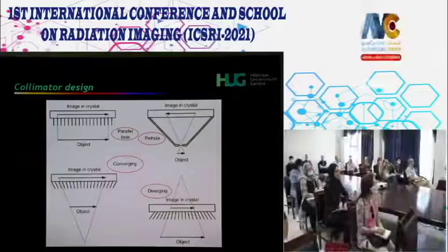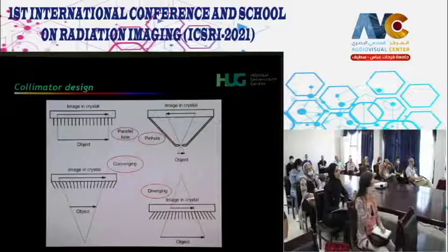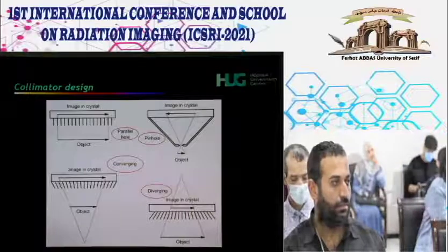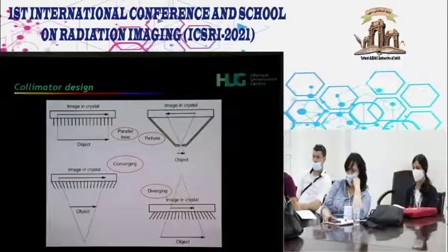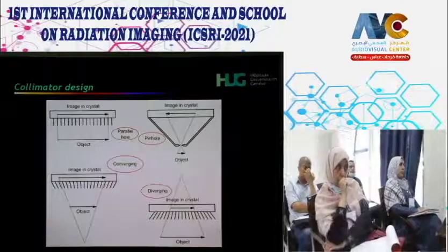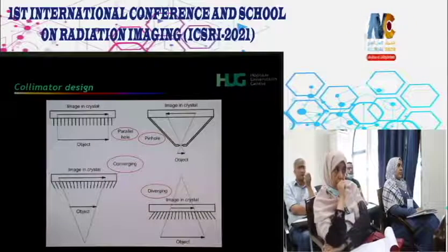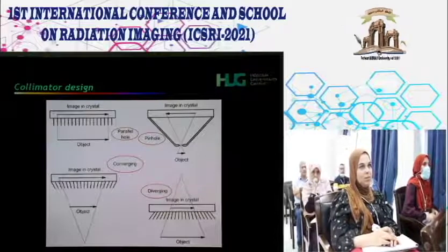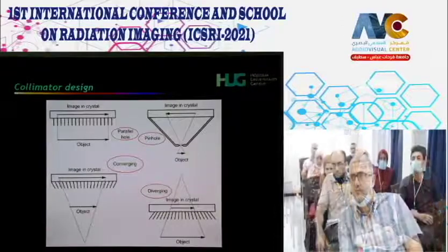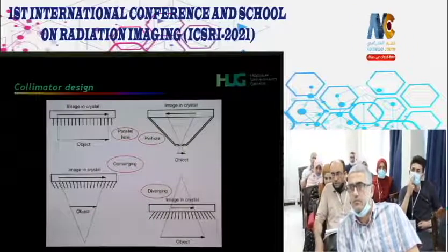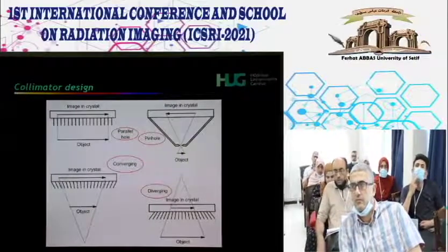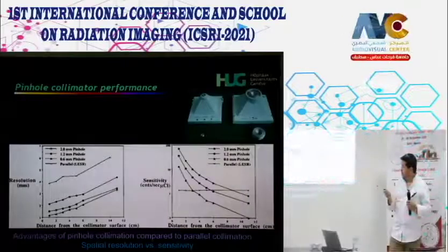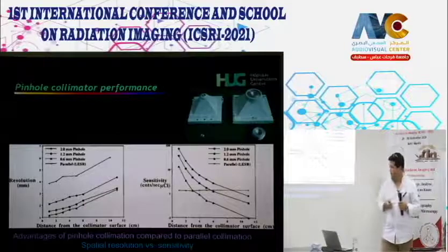The collimator is fundamental to planar scintigraphy. Four main geometries: parallel (most widely used, direct 1:1 size correspondence), pinhole (inverts image, significant zoom—used for thyroid and pediatric imaging), diverging, and converging collimators—used to increase or decrease the field of view depending on the application.